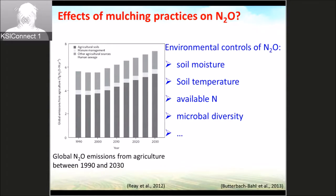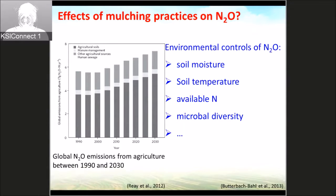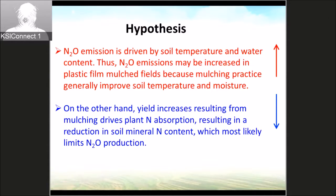With the increase of population and demand for food production, N2O emissions will also increase. The environmental factors affecting N2O include soil moisture, soil temperature, available nitrogen, and macroeconomics. Our hypothesis is that N2O emissions are driven by soil temperature and water content.